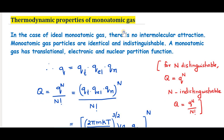In the case of an ideal monoatomic gas, as we know, there are no intermolecular forces of attraction. The total energy of an ideal monoatomic gas will be a combination of translational energy, electronic energy, and nuclear energy. Since there is no bond formation, the contribution from rotational and vibrational energies will be zero. So the main energy will be the translational energy plus electronic energy due to the distribution of electrons in various energy states, and also nuclear energy due to the spin of the atom.